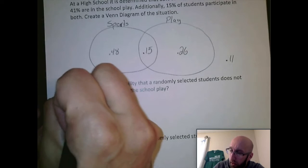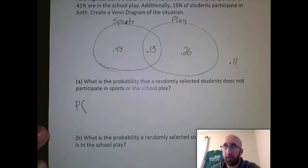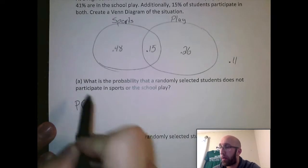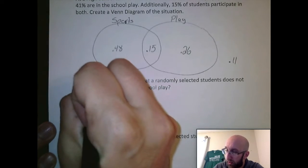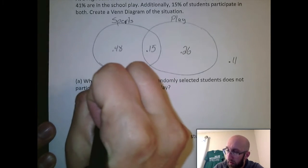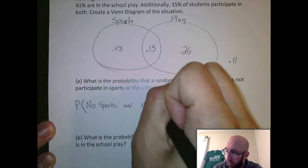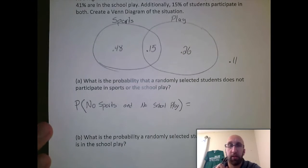So always important is setting up the notation and really just knowing what it's asking about. If they're saying the probability that a randomly selected student does not participate in sports or the school play, what they're really asking is the probability that they have no sports and no school play. So they do neither.